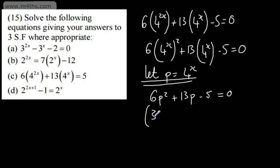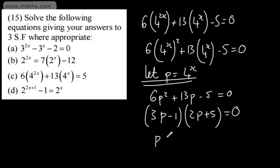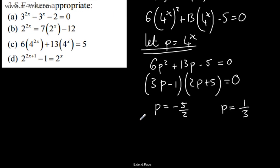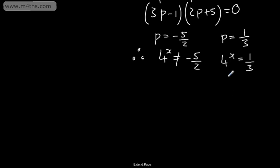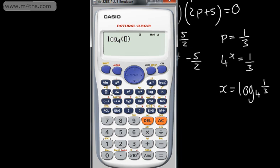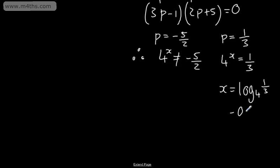That looks like it will factor. Let's try 3p minus 1 times 2p plus 5 equals 0. Yes, that's correct. So p equals negative 5 over 2 or p equals positive 1 third. Making our substitution back: 4 to the x can never equal negative 5 over 2, so that's rejected. And 4 to the x equals 1 third. We need to find what power 4 is raised by to get 1 third, so x equals log to the base 4 of 1 third. Evaluating that gives negative 0.792, to 3 significant figures. So there's only one solution.